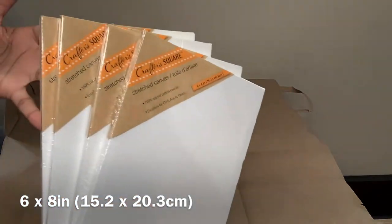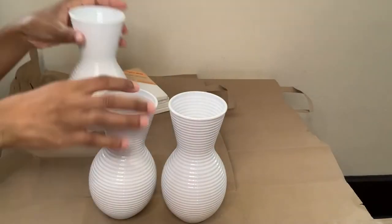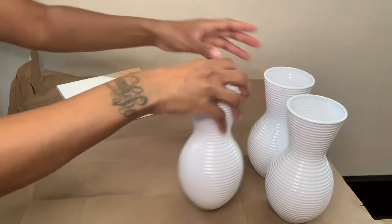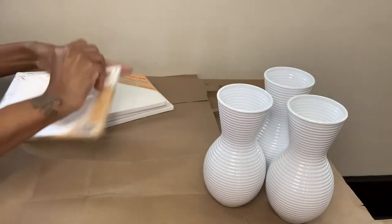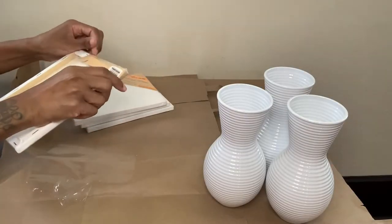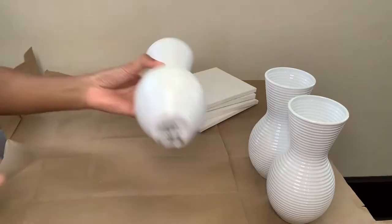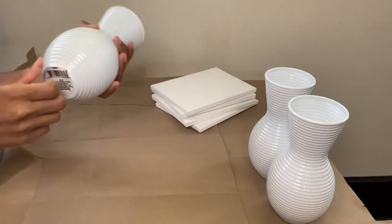So I got these four canvases from the Dollar Tree and also these cute little vases. And the first thing I'm going to do is remove all the plastic and everything from all my canvases and then remove the stickers from the bottom of my vases.